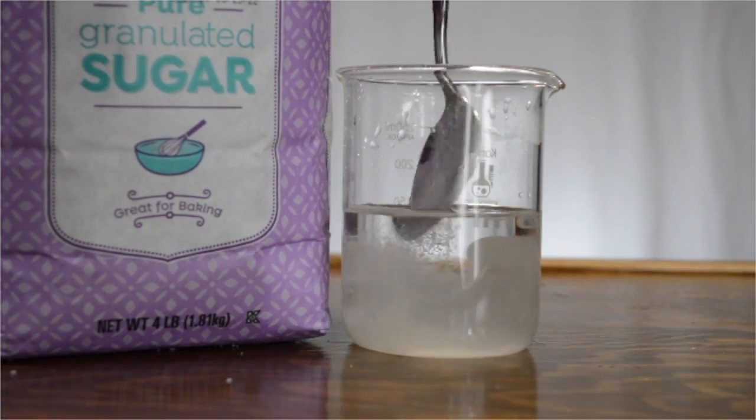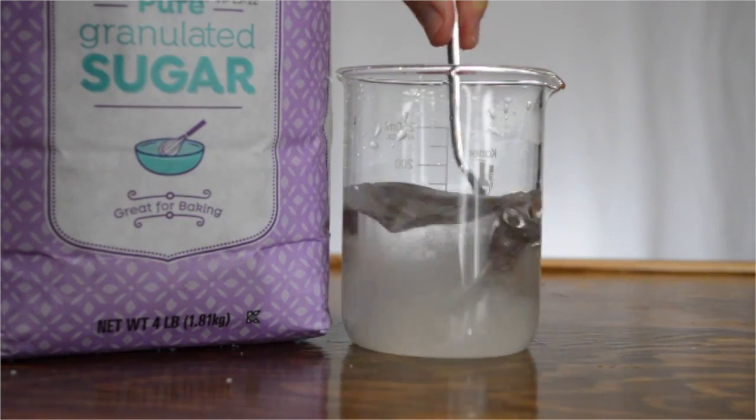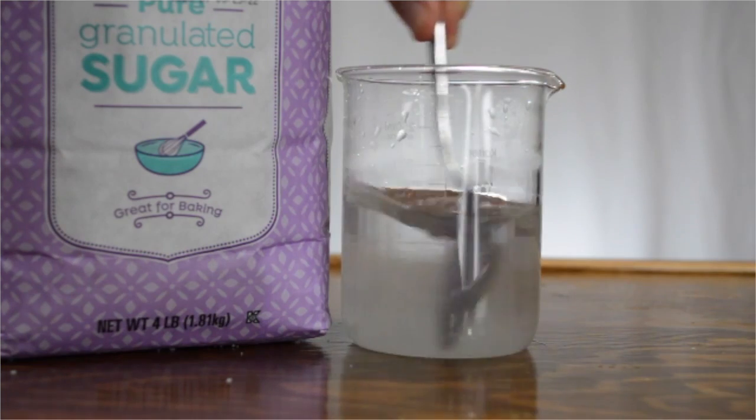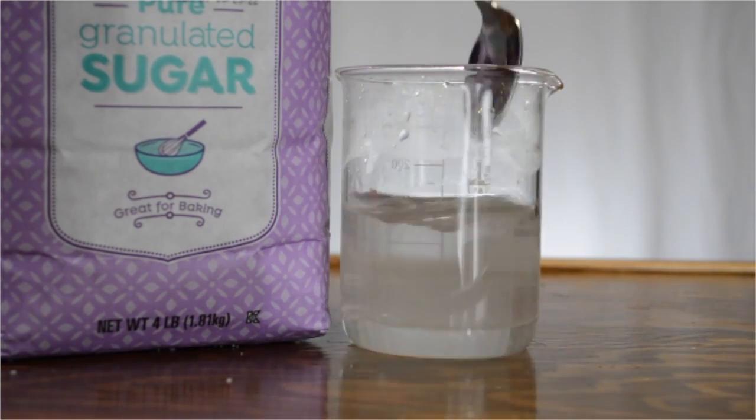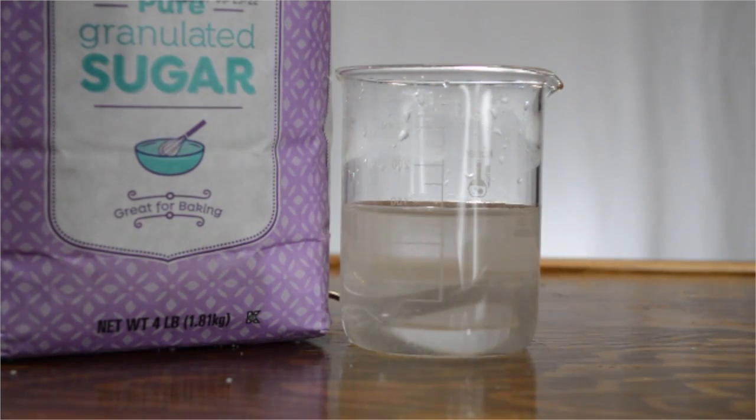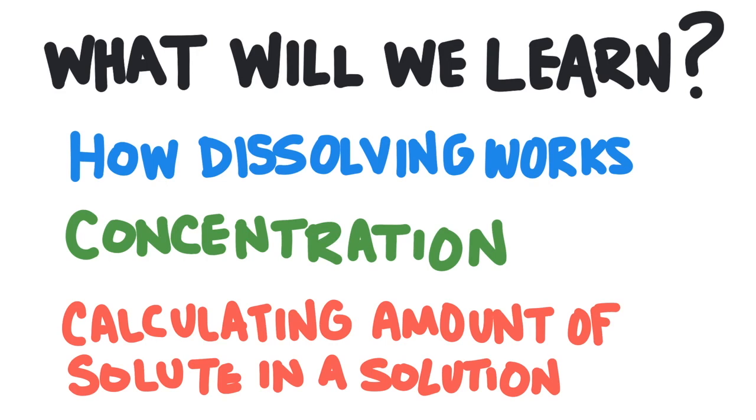Dissolving is a common and familiar process. Put something like sugar into water, give it a stir, and it dissolves. But what actually happens when something dissolves in water? In this video, we will learn first how the dissolving process works. Then, we'll learn how scientists measure concentration when something is dissolved. Next, we'll learn how to calculate the amount of solute based on the concentration.